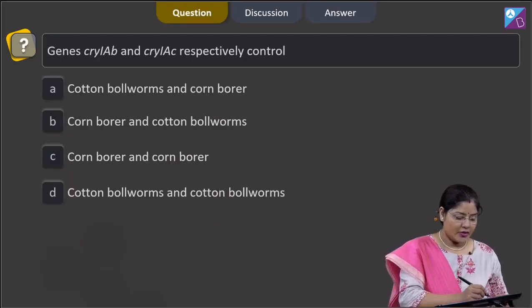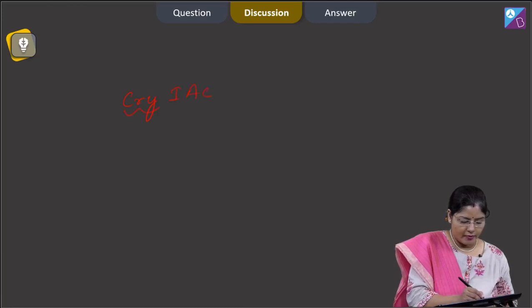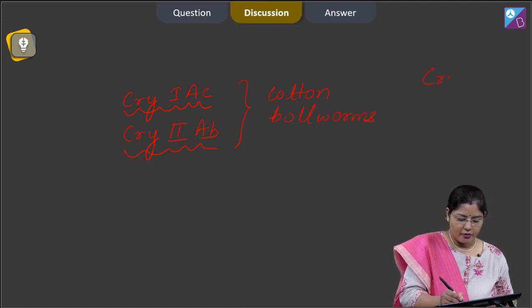Proceeding to the next question. Question states that genes cry1Ab and cry1Ac respectively control... cry1Ac and cry2Ab controls cotton bollworms while cry1Ab controls corn borer.